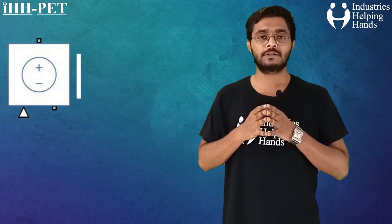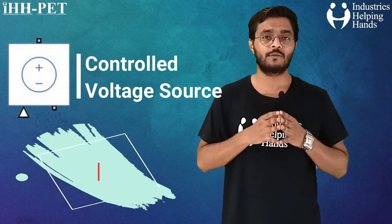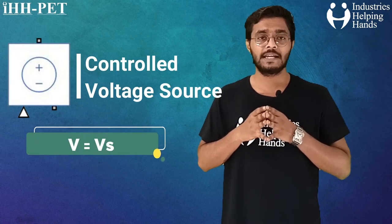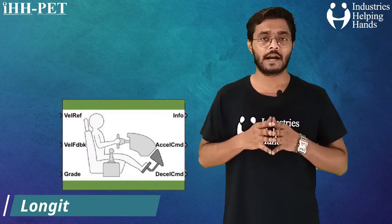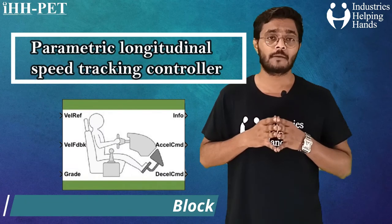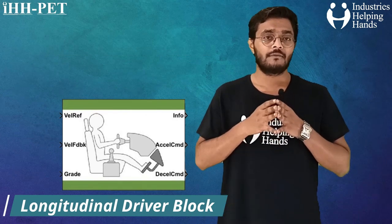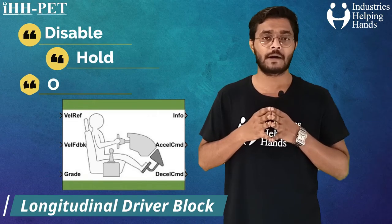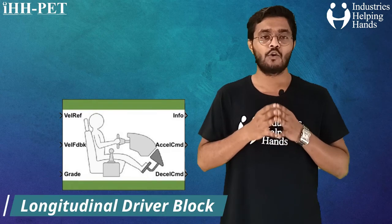The controlled voltage source block represents an ideal voltage source powerful enough to maintain the specified voltage at its output regardless of current. The output voltage V equals VS, the numerical value at the physical signal port. The longitudinal driver block is a parametric longitudinal speed tracking controller that generates normalized acceleration and braking commands based on reference and feedback velocities. External actions can disable, hold, or override the closed-loop commands, and the block uses this priority order: disable, hold, then override.